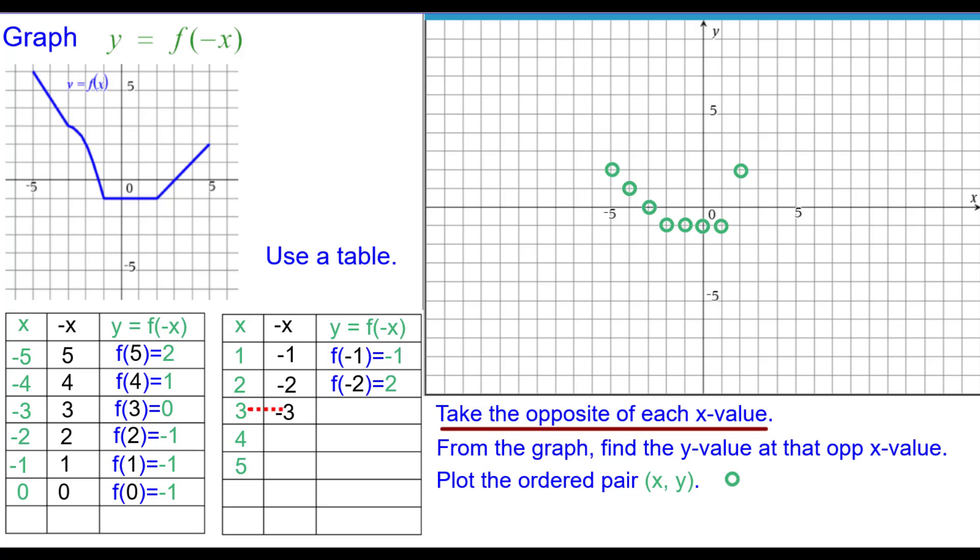3's opposite, f at negative 3 is 3, so 3 comma 3. 4's opposite is negative 4. f at negative 4 is actually at 4 and a half, so 4 comma 4 and a half. And 5's opposite is negative 5. The function's value is its maximum up there at 6, so 5 comma 6.